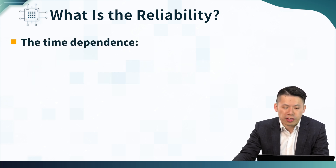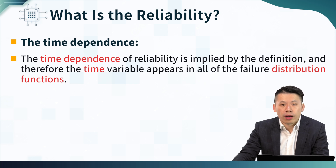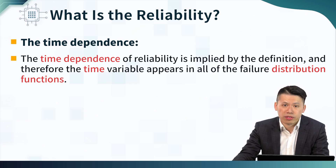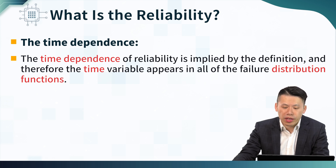The third part is time dependency. The time dependency of reliability is implied by the definition, and therefore time variables appear in all failure distribution functions. One of the main differences between typical semiconductor device physics and reliability in semiconductor devices is this time factor. In typical device characterization, we measure current versus voltage characteristics with no time factor. But in reliability, we are interested in time-dependent current and time-dependent voltage characteristics, and our failure distribution functions must also consider the time factor.